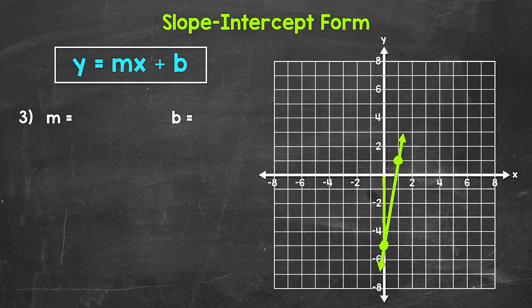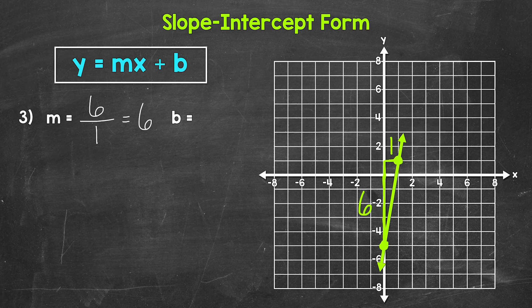We go up 6 units — and since we went up, that is a positive, so our rise is 6. And then our run, we need to go over 1 unit to the right, so it's positive — our run is 1. So our slope is a rise of 6 over a run of 1, which simplifies to just 6. And then our y-intercept is negative 5. Now we can write our equation — we plug in 6 for m and negative 5 for b.